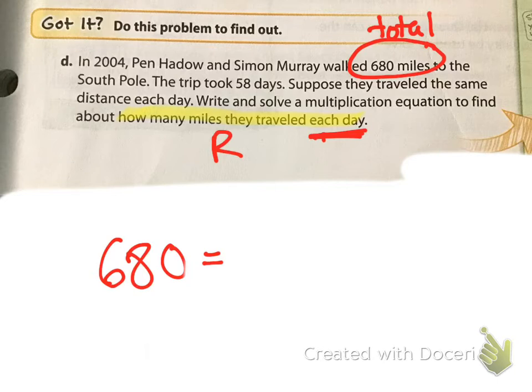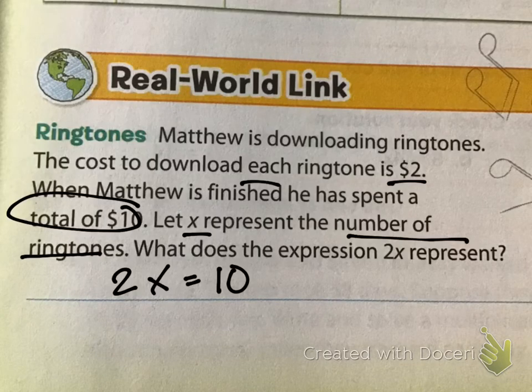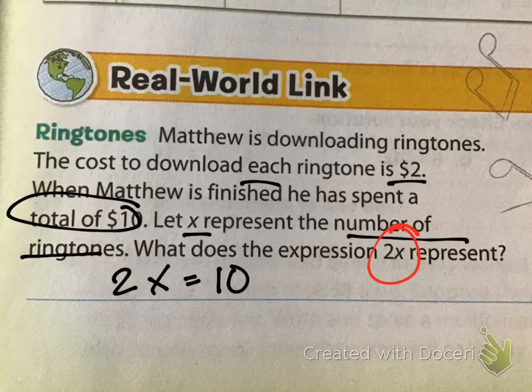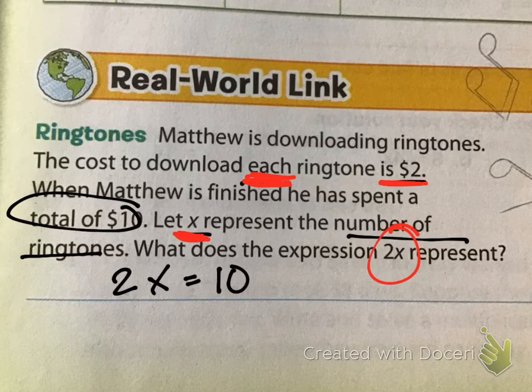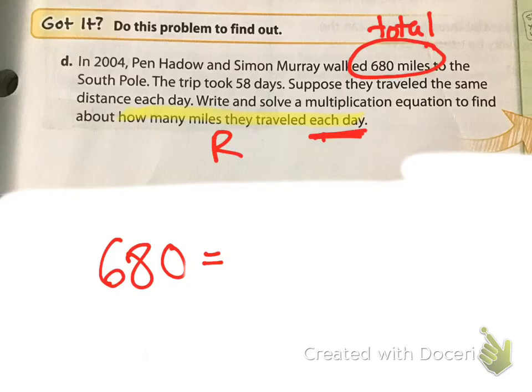What else does it ask us in that highlighted sentence? How many miles he travels each day? And when we know that each, what does that mean? So, our highlighted portion, our unknown, is how many miles they traveled each day. I underlined that each here. Let's look back at our warm-up. Why is this 2x? What does that 2x mean, Adriana? Each x is $2. So, if we look here, each day, they go R miles. How many days are there, Anita? So, every 58 days, there's 58 days. Each day, they go R miles.